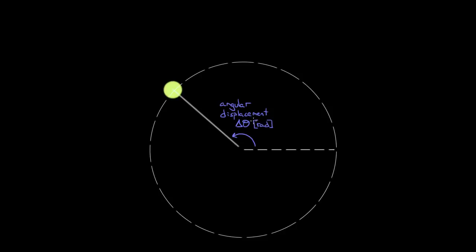How would we convert angular displacement into a regular motion variable? The regular displacement for the ball — starting over here and ending over here — would be the straight-line distance between those two points. That's a little weird, and it requires the law of cosines, which is more in depth than needed here. The better reason is that it isn't all that useful. There's a much more useful quantity that tells you how far the ball went: the arc length of the ball.